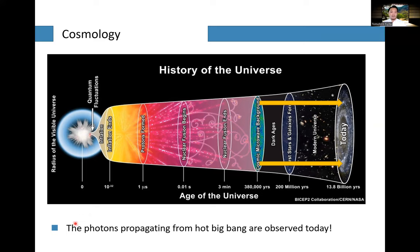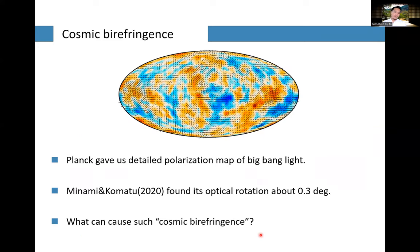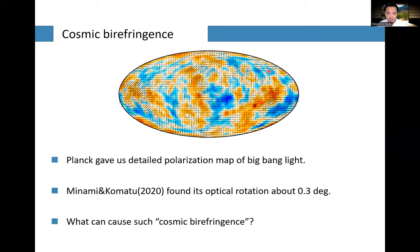We can observe such photons — photons propagating from the hot Big Bang being observed today — for example, by the Planck satellite launched by the European Space Agency. Planck gave us detailed polarization maps of the CMB photons.